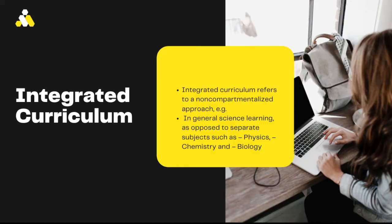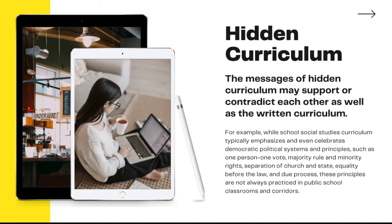Integrated curriculum refers to an uncompartmentalized approach in general science learning, as opposed to separate subjects such as physics, chemistry, and biology. The hidden curriculum — the messages of a hidden curriculum may support or contradict each other as well as the written curriculum. For example, while school social studies curriculum typically emphasizes democratic political systems and principles such as one person one vote, majority rule, minority rights, separation of church and state, and equality before the law, these principles are not always practiced in public classrooms and corridors.